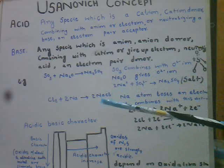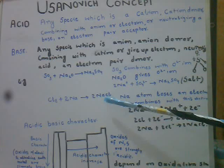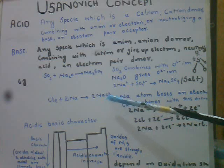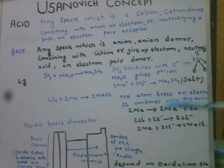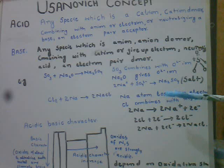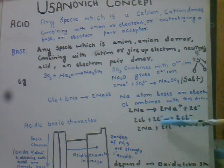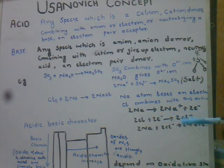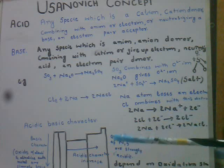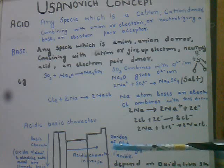Cl2 aur 2Na ki combination se reaction se hamare paas Sodium Chloride banta hai. Na atom electron ko lose karta hai — jo Na atom electron ko deta hai woh Acid ke taur par kaam karta hai. Chlorine is electron ko leta hai — yeh Base ke taur par kaam karta hai. 2 Na 2 electrons lose karta hai, 2 Chlorine 2 electrons gain karta hai, 2 sodium ions aur 2 chloride ions bante hain, aur in dono ke reaction se Salt produce hota hai.